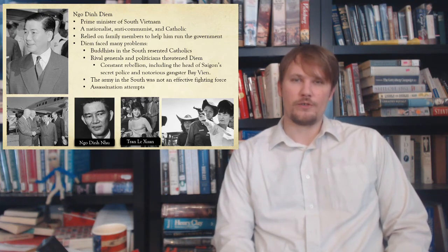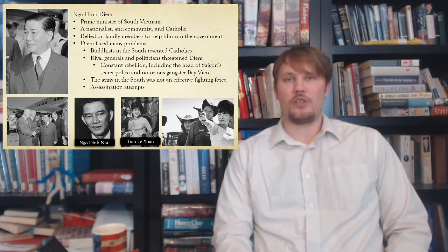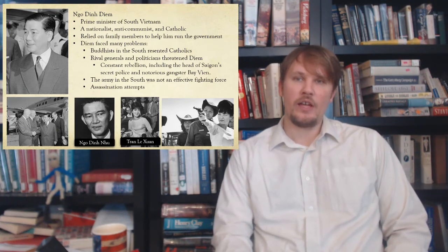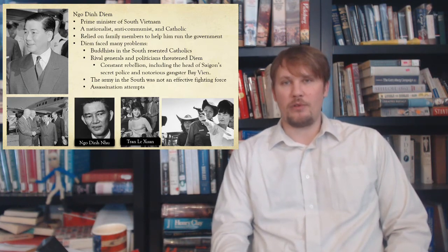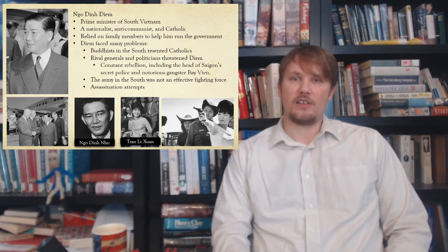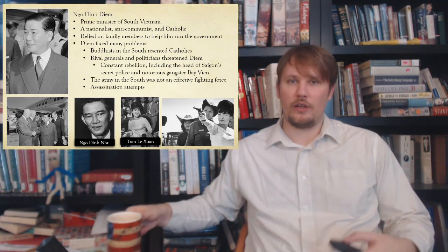Unification elections were supposed to take place in 1956 but were canceled because Diem resisted them. There was a fear that Ho would get nearly 100 percent of the vote in the North as a communist dictator, and Diem was not as popular as Ho. The United States backed Diem in this decision. Under Eisenhower, the U.S. backed him as leader of the South and gave him money and military weapons.